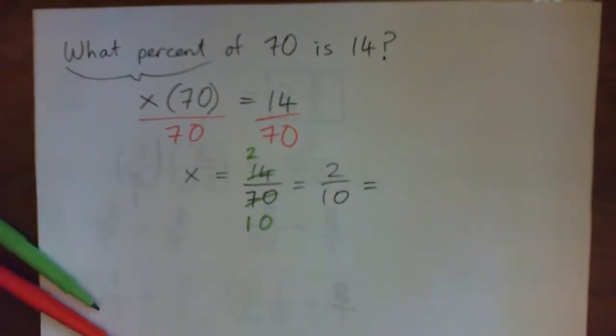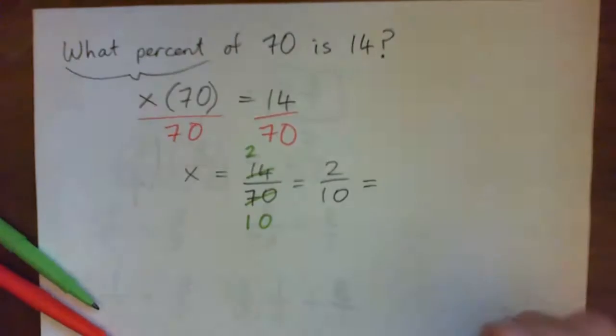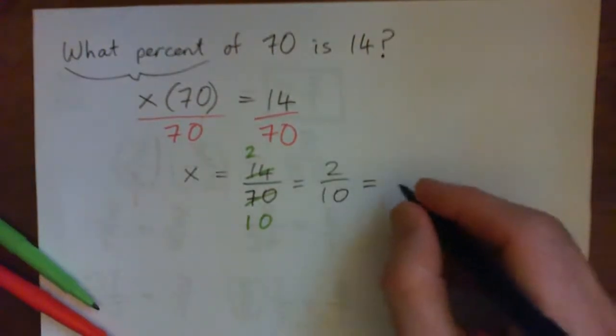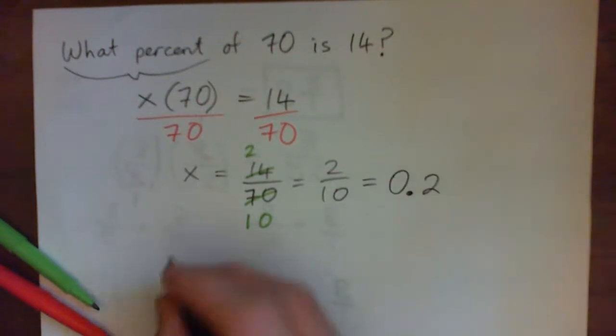But just for fun, can you give me 2 tenths as a decimal? Because I kind of want x as a decimal, because x is like the percentage, and I need a decimal before I can write the percentage. So what's 2 tenths as a decimal? So it's 0.2, because that's 2 tenths. And so if x equals 0.2, now can you turn that into a percentage?